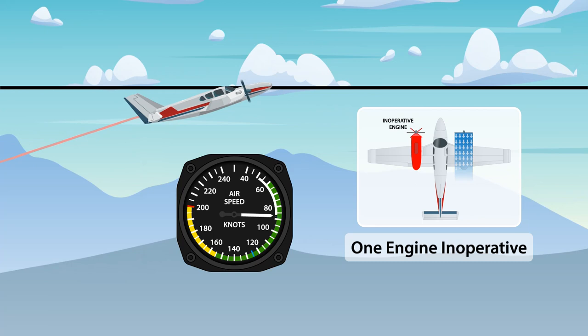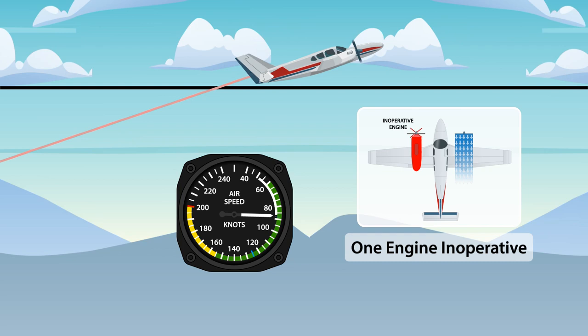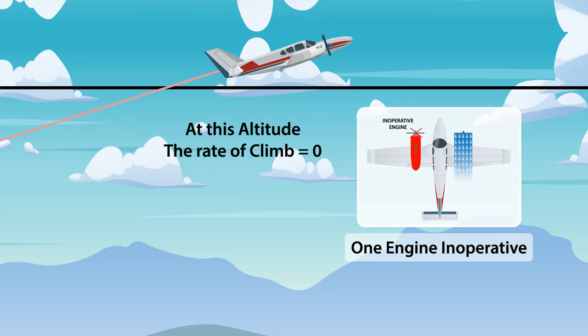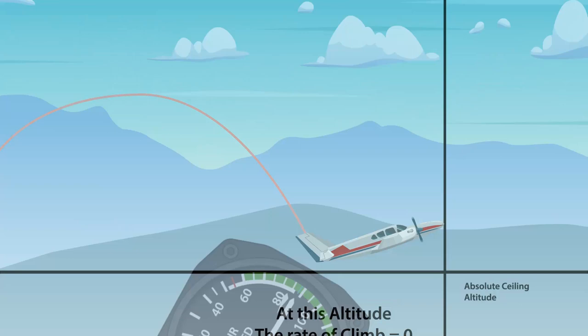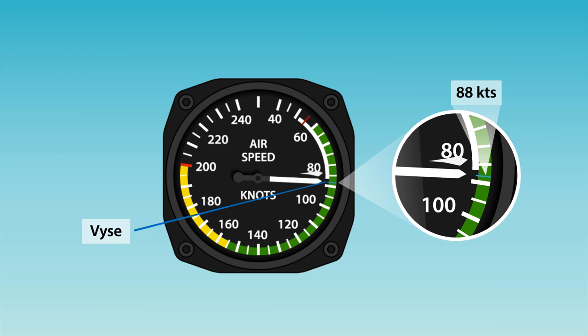VYSE is also the airspeed that yields the minimum rate of sink in a multi-engine aircraft with one engine inoperative when the aircraft is above the single-engine absolute ceiling. The single-engine absolute ceiling is where the rate of climb is zero when operating on a single engine in a multi-engine aircraft. Should the pilot be flying above that altitude and lose an engine, the aircraft will subsequently drift down to the single-engine absolute ceiling altitude. VYSE is commonly referred to as blue line, as it is marked on the airspeed indicator with a blue line.